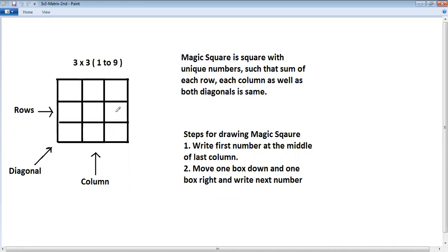Let's now draw 3 by 3 magic square. The first step says write first number in the middle of last column. The last column is the middle box. So one will complete. That completes first step. Now you have to continue repeating second step till all boxes are filled. And when you are doing that you have to learn 3 rules.